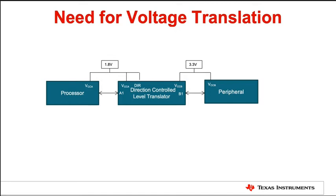The most common example is the communication between a processor and a peripheral device that operate on two different voltage nodes, such as 3.3 volts and 1.8 volts, as shown here. The level shifting device in this example helps to shift the output of the processor up to 3.3 volts to meet the input level requirements of the peripheral device. Conversely, the level translator shifts the output voltage of the peripheral device down to meet the input level requirements of the processor. Level translators are an essential building block for most system signal chains.